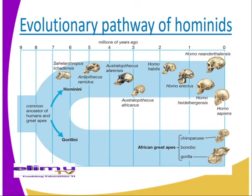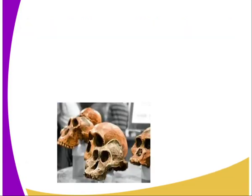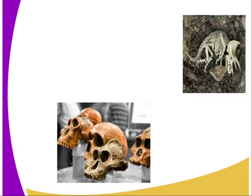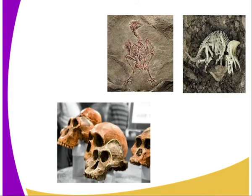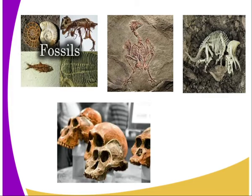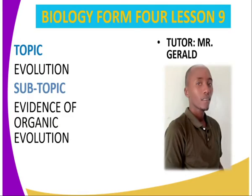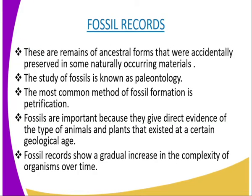The genus Australopithecus emerged about 4 million years ago in East and South Africa. Representatives include Australopithecus anamensis, discovered from Lake Turkana; Australopithecus afarensis, found in Afar, Ethiopia, dated 3.6 million years ago; Australopithecus africanus, dated 3 million years ago; and Australopithecus robustus, dated 2 million years ago — both found in South Africa. Zinjanthropus boisei, or the nutcracker man, dated 1.2 million years ago, was found in Olduvai Gorge, and is thought to be closely related to Australopithecus robustus. Zinjanthropus came to an end about 1 million years ago.